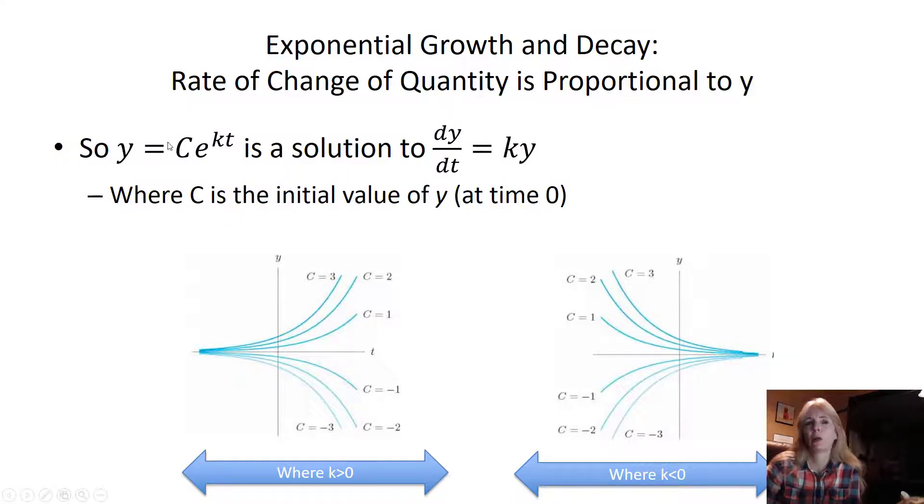And of course, depending on what c equals, the initial value, think about it when I say c is the initial value. Well, if t time, the initial would be zero, then e to the zero would just be what c equals. So based on different values here of c where my k is positive, so I have a positive value, and versus when I have a negative value, you can see some exponential growth and exponential decay.